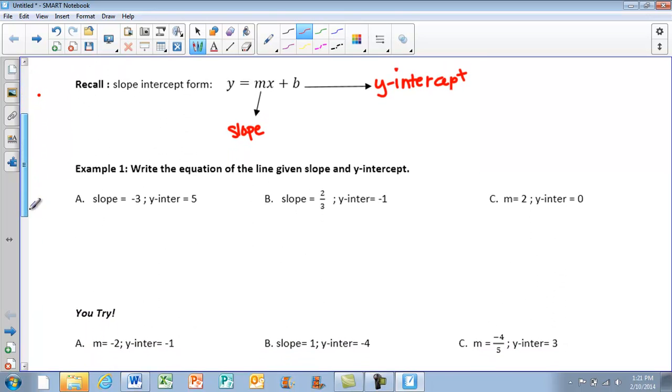So if we look at our first example, it says write the equation of the line given the slope and the y-intercept. So for each of these examples, we want to plug back in that y equals mx plus b. So if we look at our first example, part A, it says that our slope is negative 3 and our y-intercept is 5.